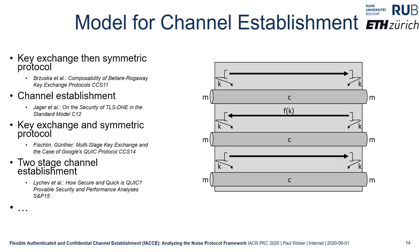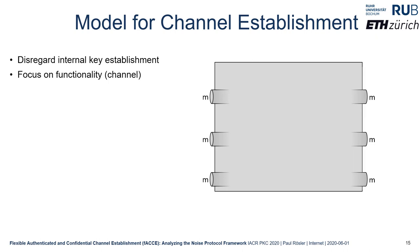A significant problem in all these works is that a stage always consists of first the key establishment and then the transmission of payload. In our work, we entirely disregard the internal key establishment mechanisms in the model and instead define our model only with respect to the channel functionality. This is because in Noise, key establishment and payload transmission are fully merged — payload can be transmitted confidentially at the same moment the protecting key is transmitted. Additionally, security definitions for a primitive should reflect what it provides functionally, not how it is constructed.